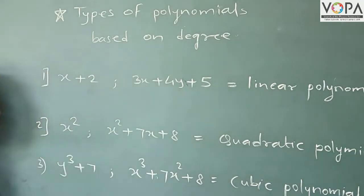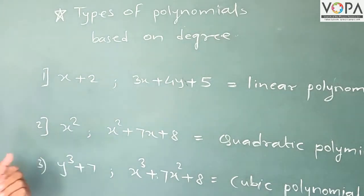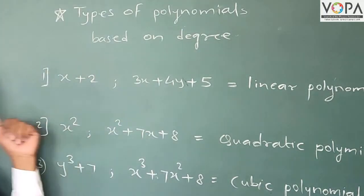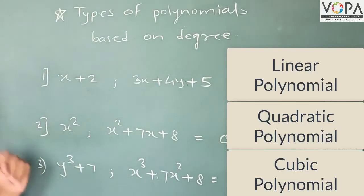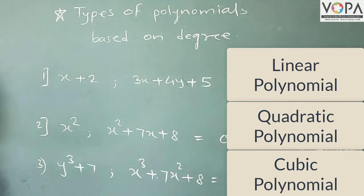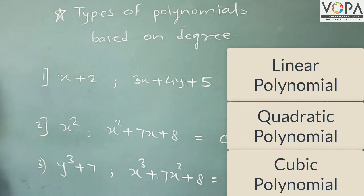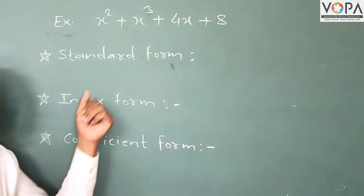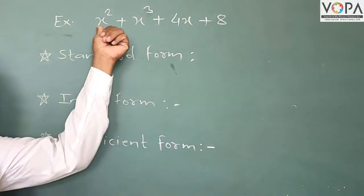To summarize: if the degree of the polynomial is 1, then it is called a linear polynomial. If the degree is 2, then it is called quadratic. And if the degree is 3, then it is called a cubic polynomial.